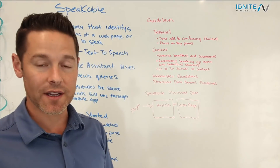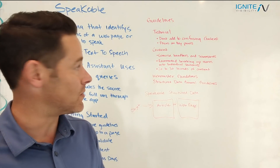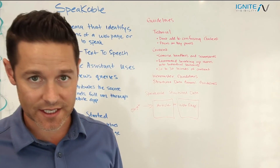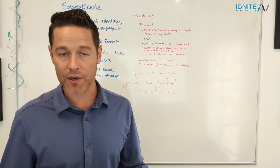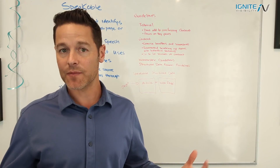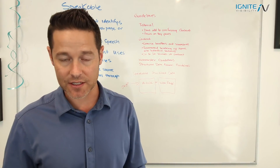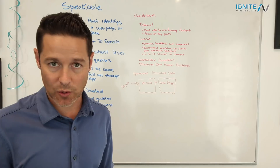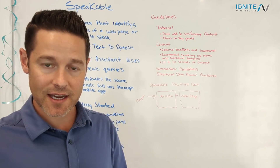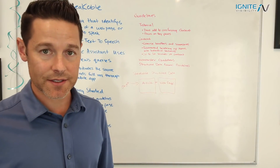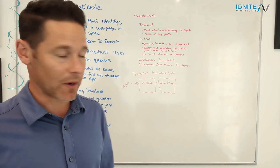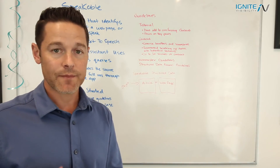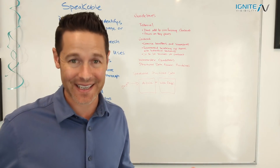On the content side, they want concise headlines as much as possible, and they want summaries. They also recommend breaking up stories into individual sentences. So if you have a news story, don't just put the whole story in there — break it up into concise snippets that will be responded to directly from the speakable markup. You also want to have 20 to 30 seconds of content maximum; more than that might not get approved.